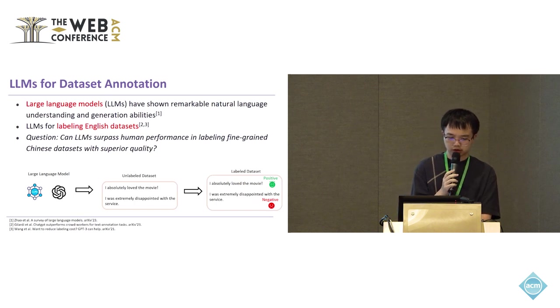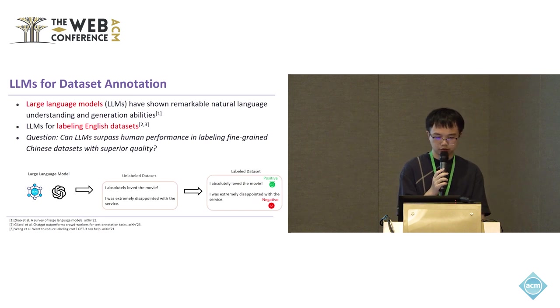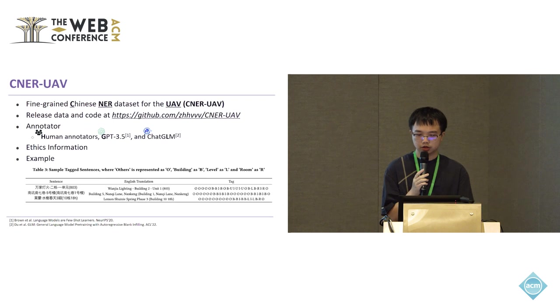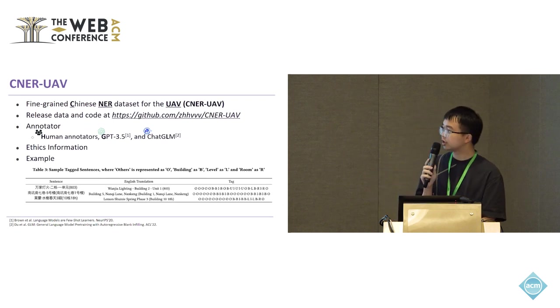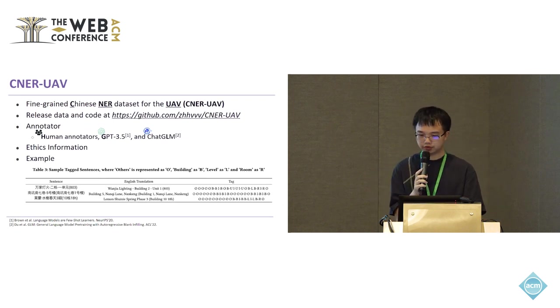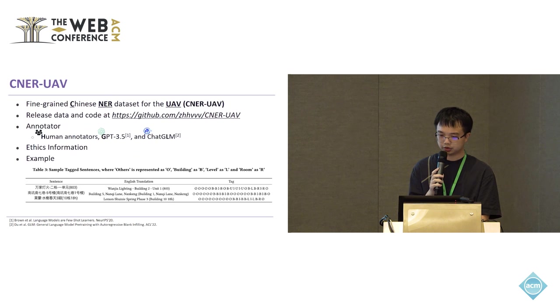Training with Chinese's intricate characters and context-dependent meanings requires a deeper understanding and more nuanced processing compared to English. In this work, we present CNER-UAV, which is a fine-grained Chinese dataset for UAV delivery. We released the data and code on GitHub.